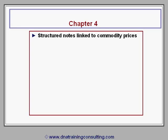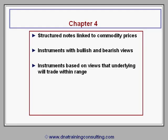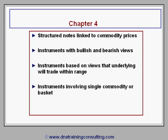Chapter 4 examines a number of typical structured notes that embed views on commodity prices, including instruments with bullish and bearish views, ones based on views that the underlying will trade within a certain range, ones that involve a single commodity or basket of commodities, and ones that provide a payoff to the investor in a currency different from the currency — usually U.S. dollars — in which the commodity ordinarily trades, known as quanto instruments.